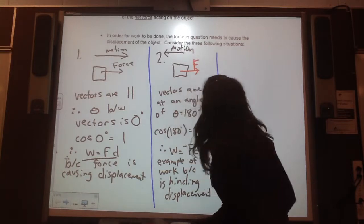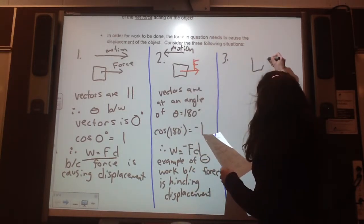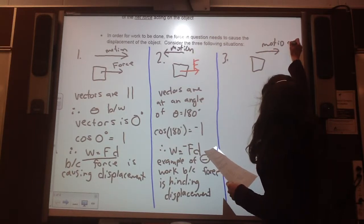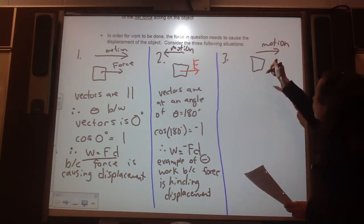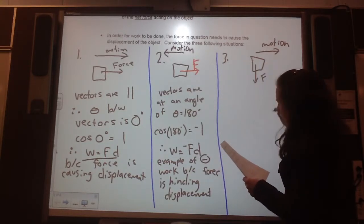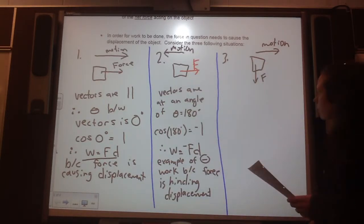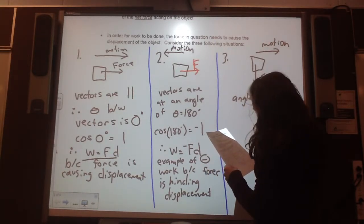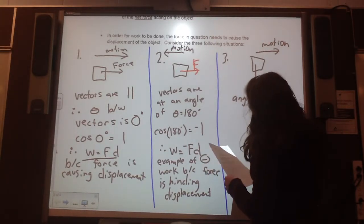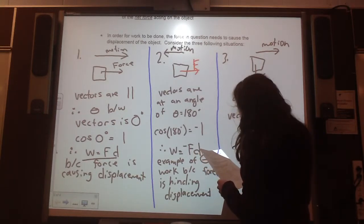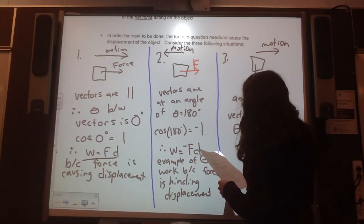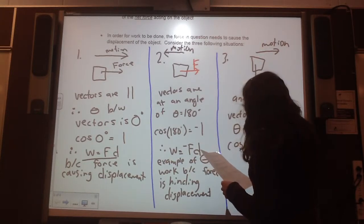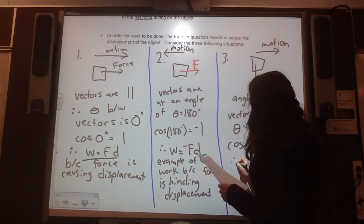Now, what if something, number three, what if something has a motion, but the force isn't pushing it that way or that way, so we just have the force of gravity pulling down. So here, the angle between vectors is theta equals 90 degrees. So cos of 90 degrees is equal to zero. Therefore, no work is being done.